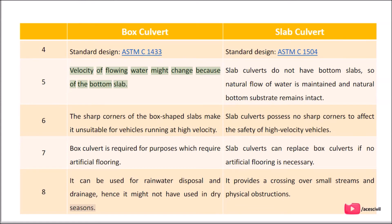Difference 5 — Water Flow: The velocity of flowing water in a box culvert might change because of the bottom slab. Slab culverts do not have bottom slabs, so the natural flow of water is maintained and the natural bottom substrate remains intact.